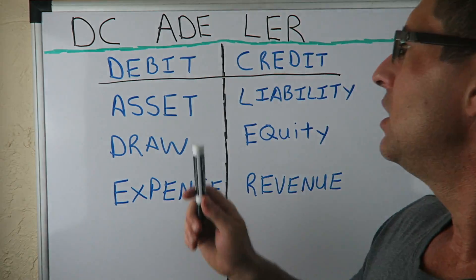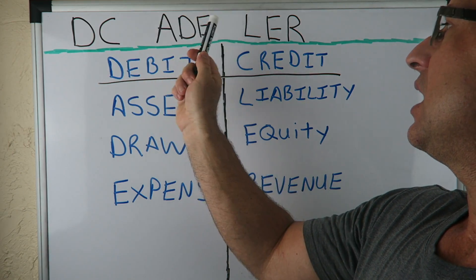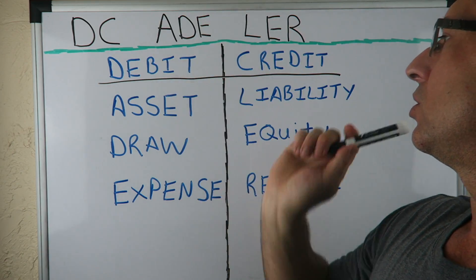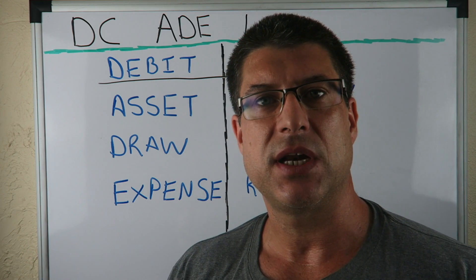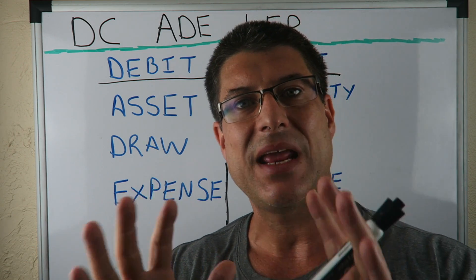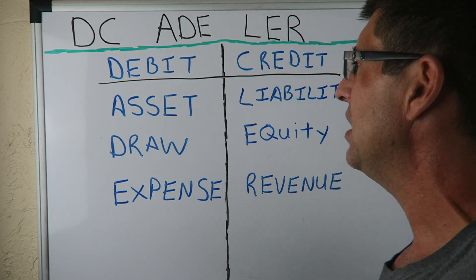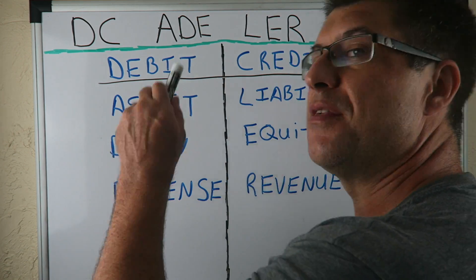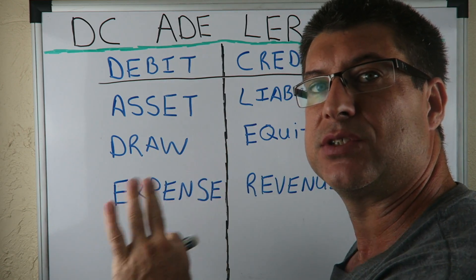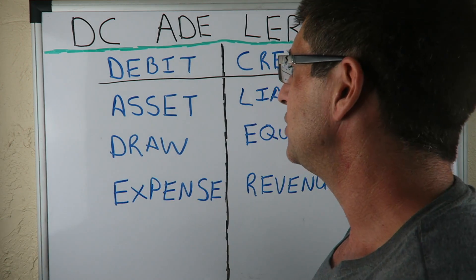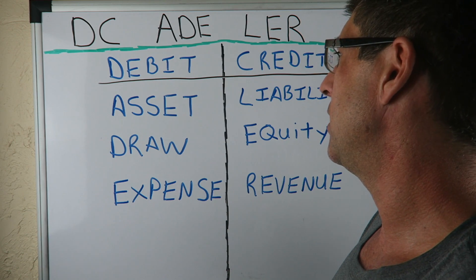First video: D-C-A-D-L-E-R. There's eight letters. That's what you're going to have to know — eight letters. Now, this has helped thousands upon thousands of people out, so just give it a chance here. Watch these videos.